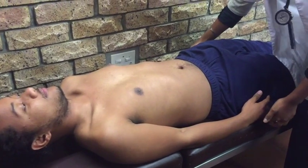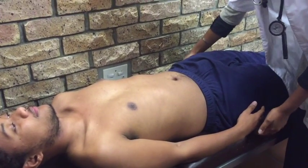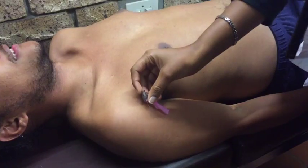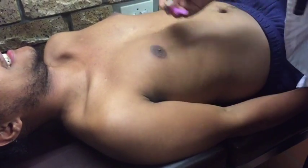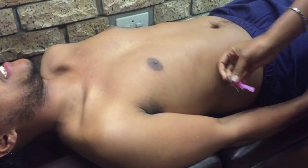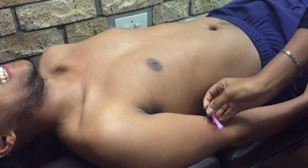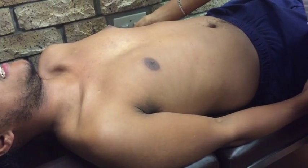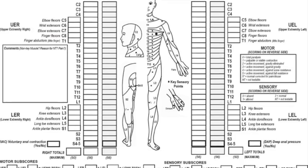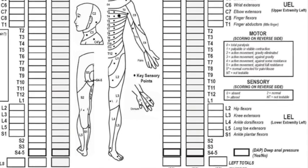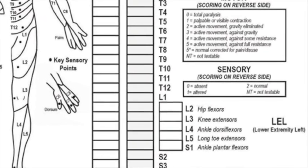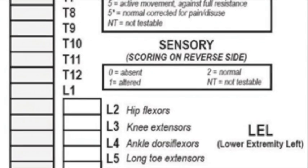Ask your patient if they feel you touch them or pinprick them in the areas mapped out on the dermatome map. Score these out of 2: 0 being absent sensation, 1 being altered, decreased or impaired sensation, and 2 being normal sensation.